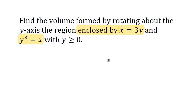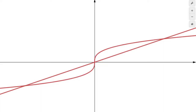With y greater than or equal to zero, the problem is indicating we want the region where y is positive, meaning the region above the x-axis. Going back to Desmos, the shaded area we want is clearly the region above the x-axis. We can disregard all other details and focus on this enclosed area.